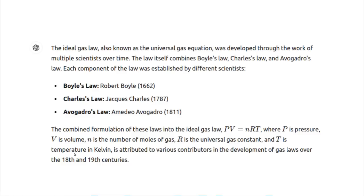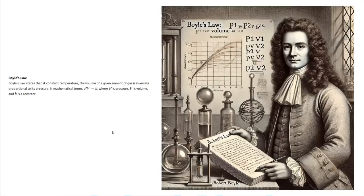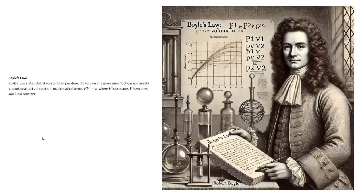One of the most fundamental principles of science is the ideal gas law. This is a law which was developed in three parts going back hundreds of years. In 1662 Robert Boyle demonstrated a relationship between pressure and volume of gases. In a closed system, in order to increase the pressure you have to decrease the volume. We're all familiar with this because this is how a bicycle pump works.